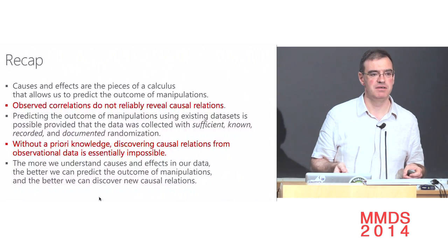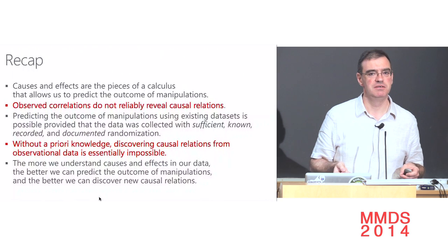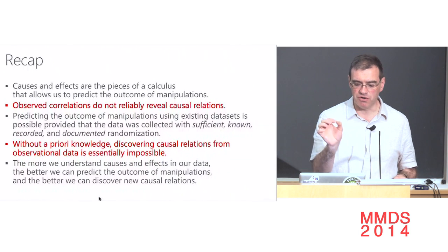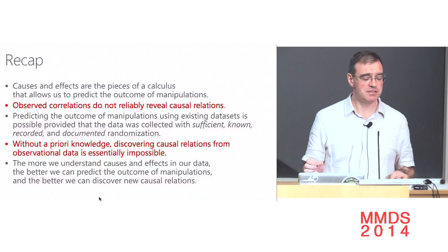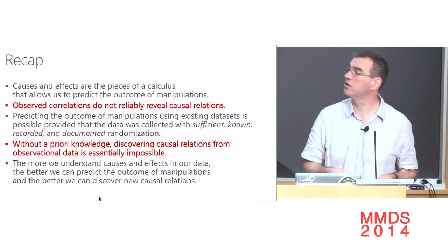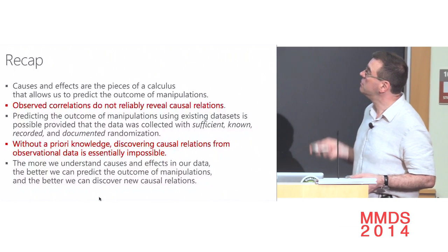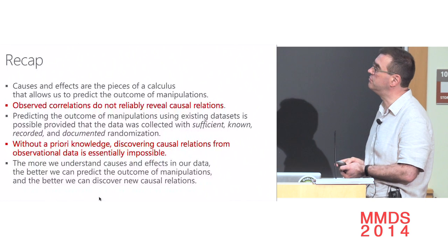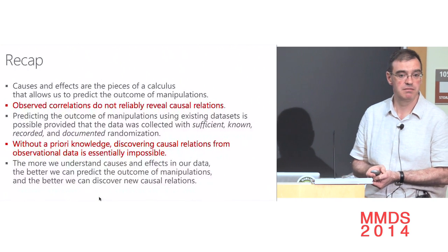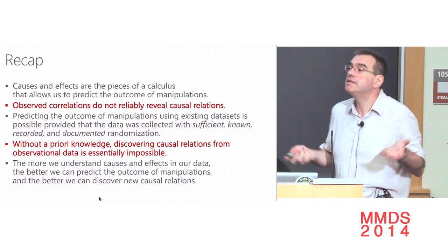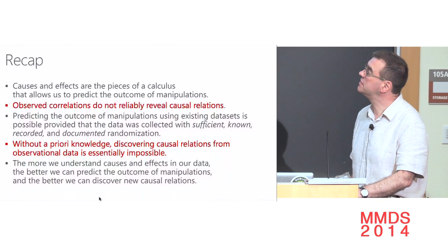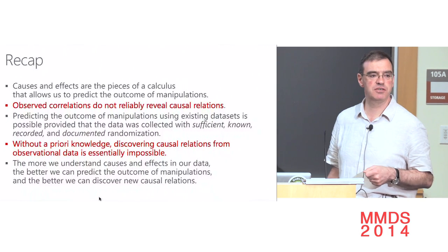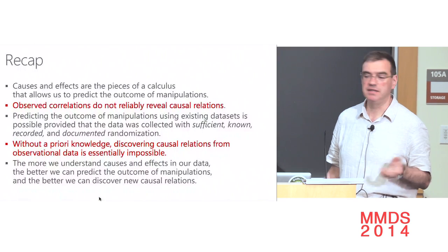In conclusion: causes and effects are the pieces of the calculus that allow us to predict the outcome of manipulations. Observed correlations do not reliably reveal causal relations — not even their direction — because of potential unobserved common causes. Predicting the outcome of manipulations using existing datasets is possible, provided the data was collected with sufficient, known, recorded, and documented randomization — a demanding requirement. Big data proponents say you collect data from everywhere and people will do magic; there is no magic. Without a priori knowledge, discovering causal relations from observational data is essentially impossible. The more we understand causes and effects in our data, the better we can predict outcomes of manipulations and discover new causal relations.